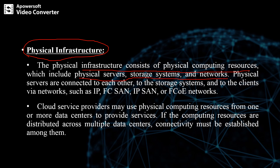Physical infrastructure basically consists of physical servers, storage systems, and networks. Physical servers are connected to each other, to the storage system, and to the client via networks like IP, FC SAN, IP SAN, or FCoE networks.